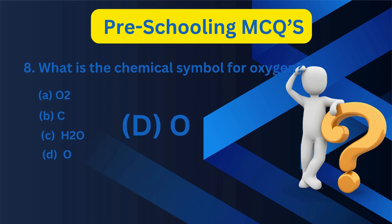8. What is the chemical symbol for oxygen? A. O2, B. [unlisted], C. H2O, D. O. D. O.